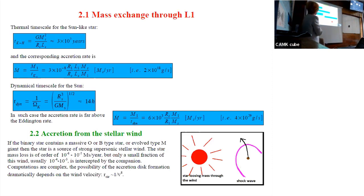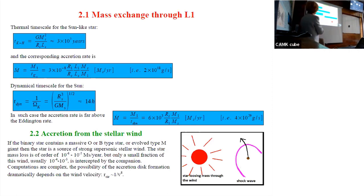On the other hand, the dynamical timescale for the sun is about 13 hours. In that case, the accretion rate would be something like 10^3 solar masses per year if the star is compact — the situation is dramatic. We will not discuss this kind of thing because there is no accretion disk or anything — it's just a dramatic event in the life of the star.